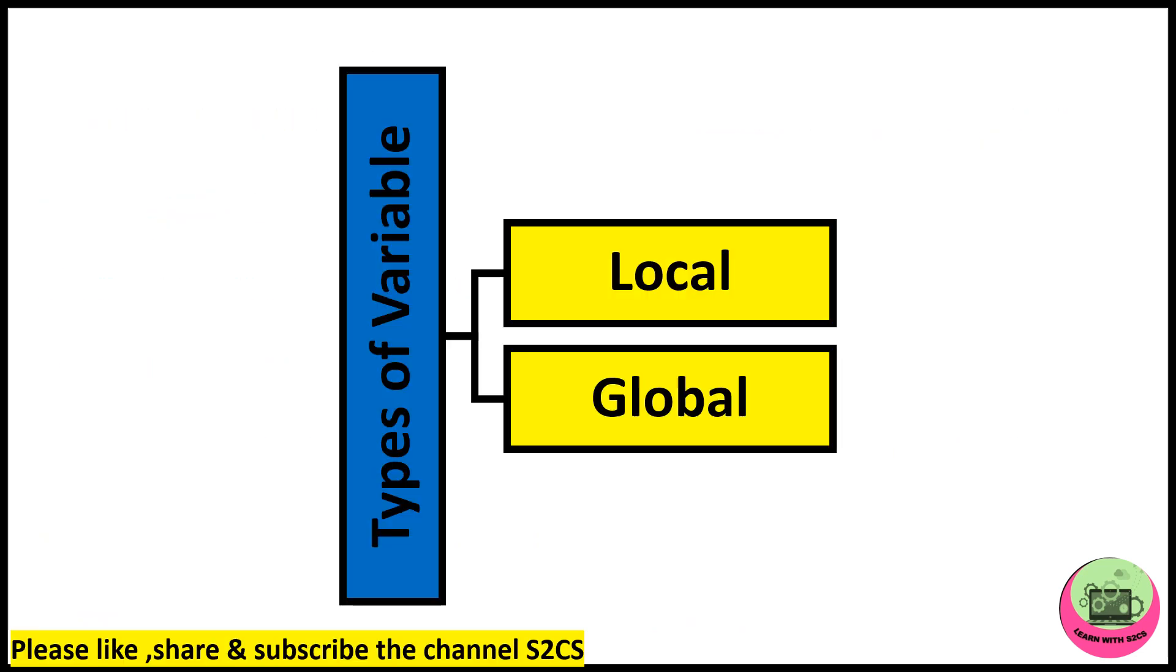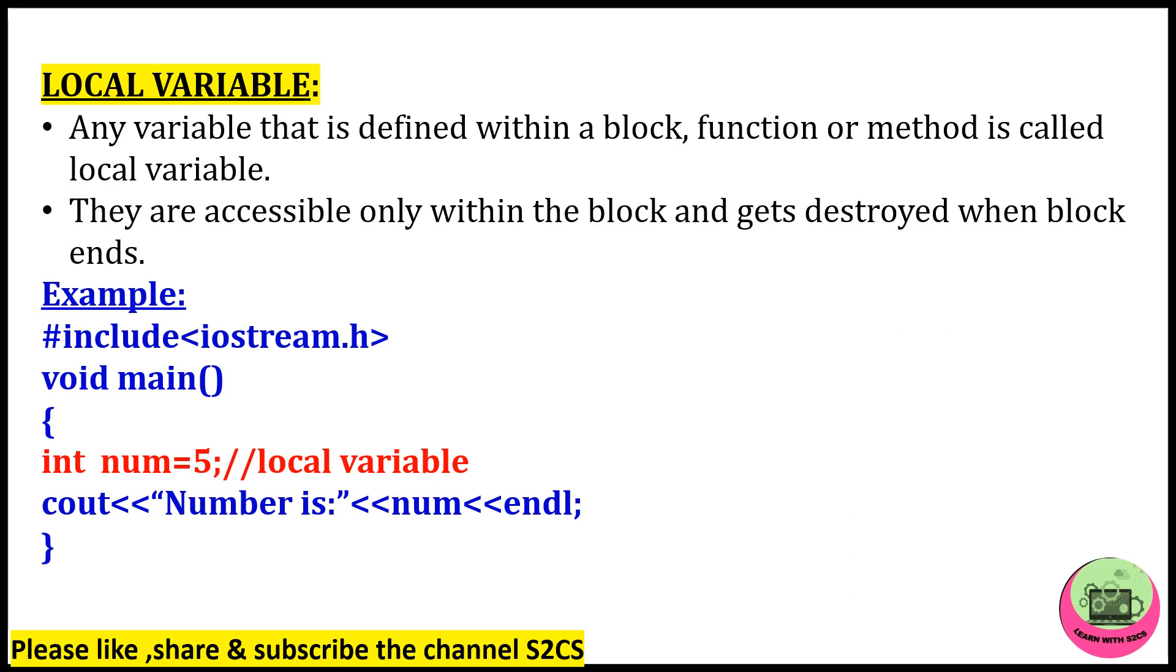Next are the types of variables. So there are two types of variables: local and global, which we are going to discuss in our today's video. First is local variable. Any variable that is defined within a block, function or method is called local variable. They are accessible only within the block and get destroyed when block ends.